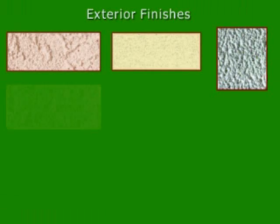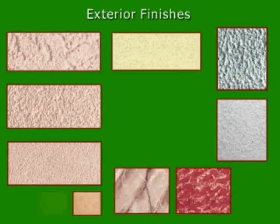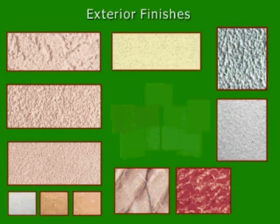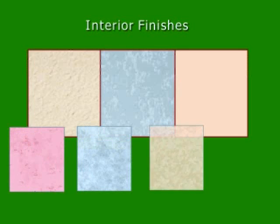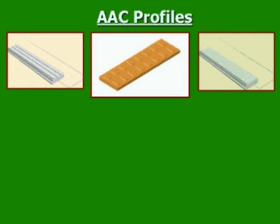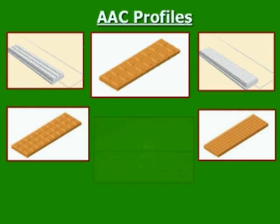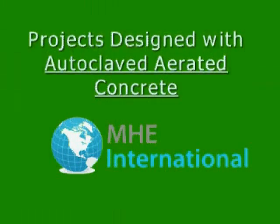AAC exterior finishes are also available from MHE in all colors, specially produced for AAC walls and ceilings, with a wide variation in textures. Interior finishes are also available from MHE in all colors and all styles, from smooth finish to orange peel. For special projects, we can produce panels with a design routed into them, which reduces on-site labor.